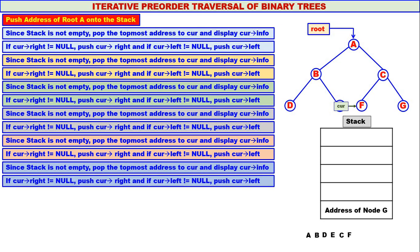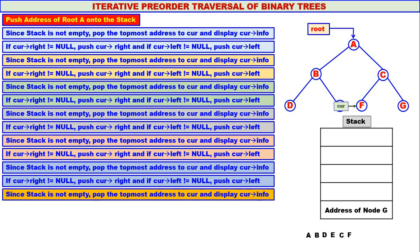The right child of F is null and the left child of F is also null, so no pushing. Again, since the stack is not empty, we pop the topmost address — the address of node G — to curr. Curr will contain the address of node G. We display curr's info, so node G is displayed.